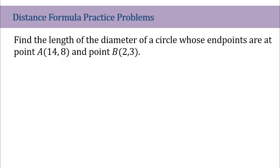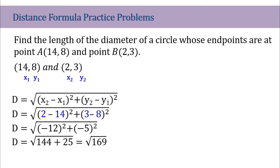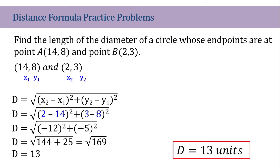Now find the length of a diameter of the circle whose endpoints are point A and point B — that is (14, 8) and (2, 3). Again, we set point 1 as point A and point 2 as point B, write the distance formula, substitute the values, and simplify. Inside the parenthesis we get negative 12 and negative 5, giving us 144 plus 25, which equals 169. The square root of 169 is 13 units. So the diameter of the circle has a length of 13 units.